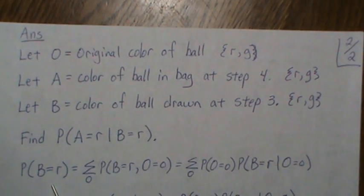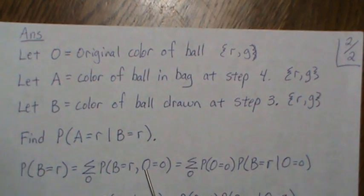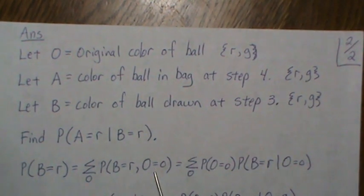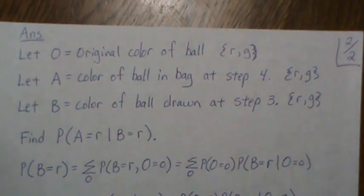The probability that B is red, meaning the color of the ball that we draw out at step three, is equal to, we introduce a variable here called O, which is the original color of the ball, and we sum over all its possibilities.